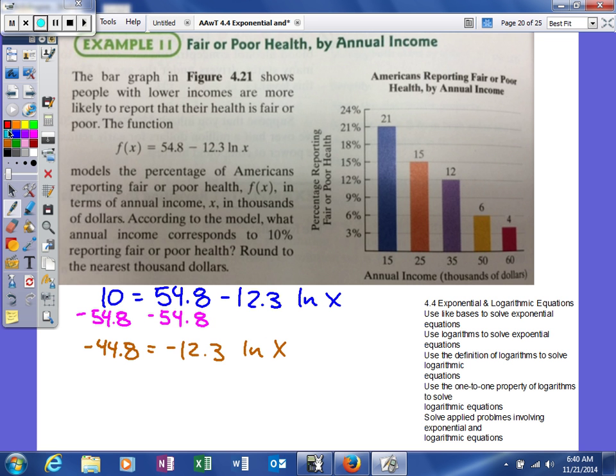So now what I'm going to do is go ahead and divide both sides by negative 12.3. So over here, I'm just going to make those both positive now, so 44.8 and then 12.3.